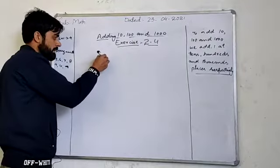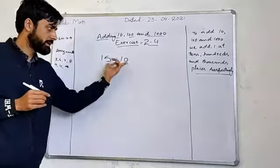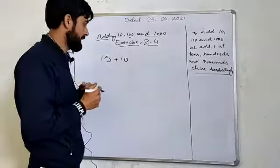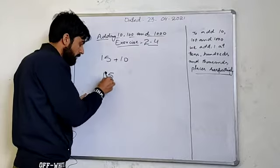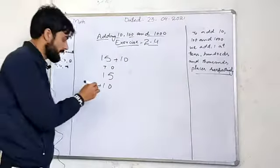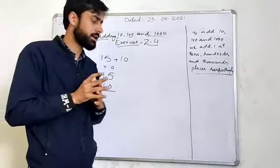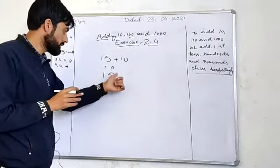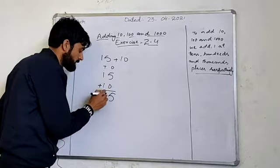We have the number 15 and we add 10 to it. So here we add: in the number 15 plus 10, we simply do 5 plus 0. You can add 0 to any number and it stays the same. So 5 plus 0 is equal to 5, and 1 plus 1 equals 2.